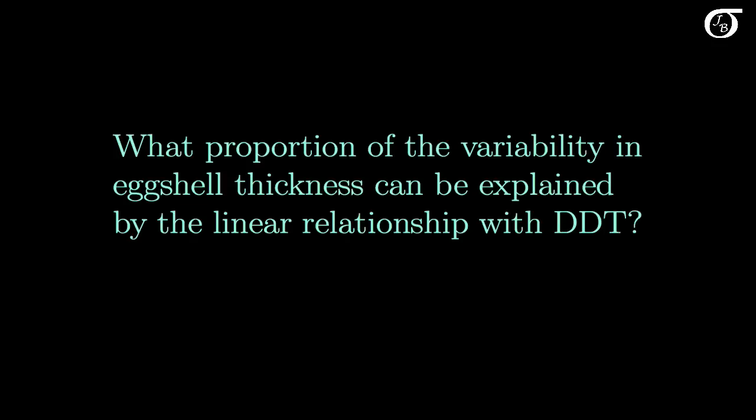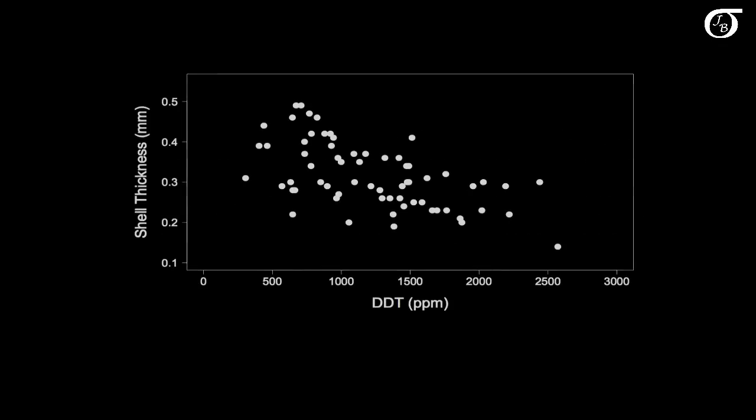What proportion of the variability in eggshell thickness can be explained by the linear relationship with DDT? These 65 eggs have some variability in their shell thickness. They vary from a high of about here to a low down here somewhere, and there's some variability.